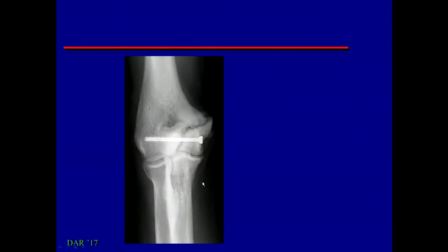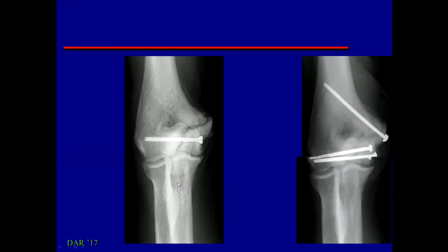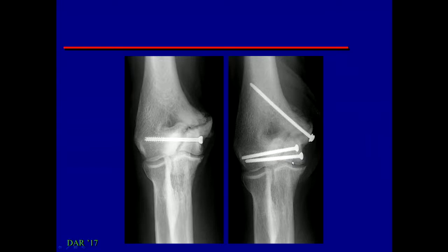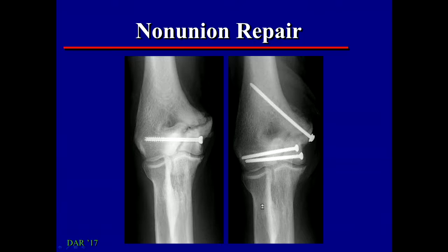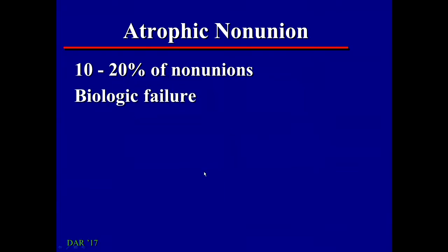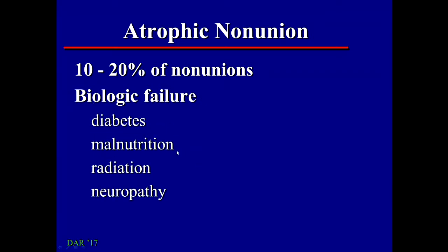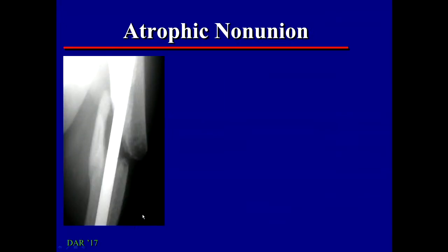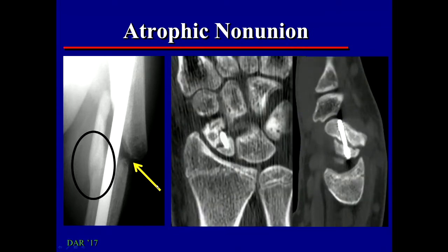All these non-unions can be treated with a non-union repair: remove the new bone formation, re-bone graft it, and put new fixation in. The less common type is atrophic non-union, which is typically a biologic failure — something is wrong with the body and it's not making any callus formation. This can be due to underlying disease like diabetes, malnutrition, radiation, or neuropathy. It's characterized by no callus formation at all. Here's a femur fracture with a butterfly fragment that healed to the distal fragment but with absolutely no callus between the main fracture fragments. On CT of a scaphoid, no callus formed at all.